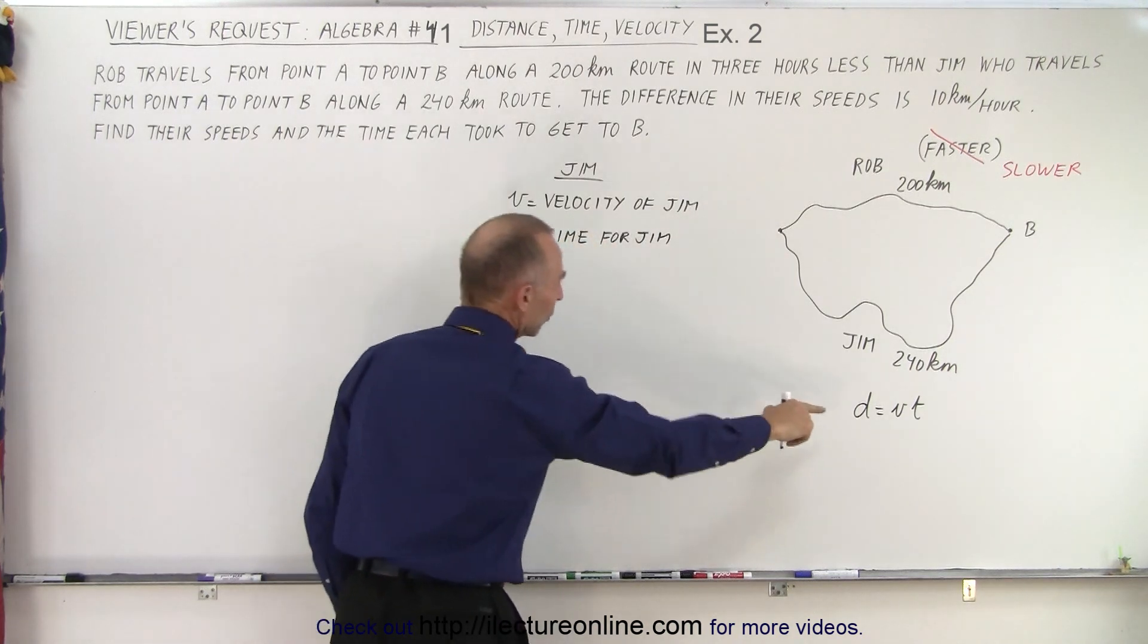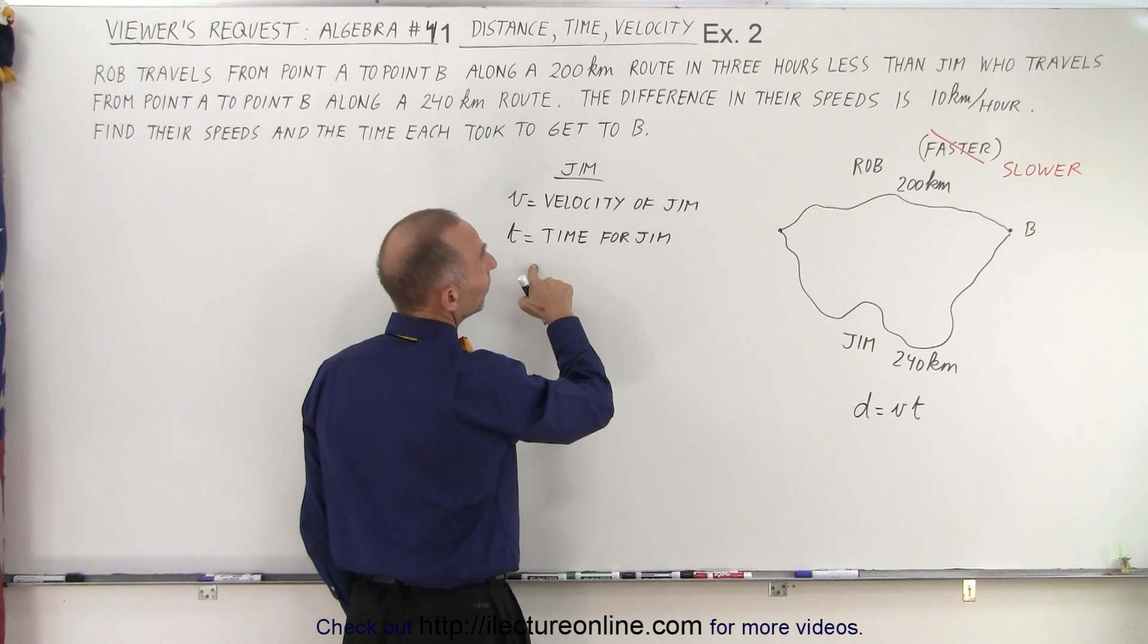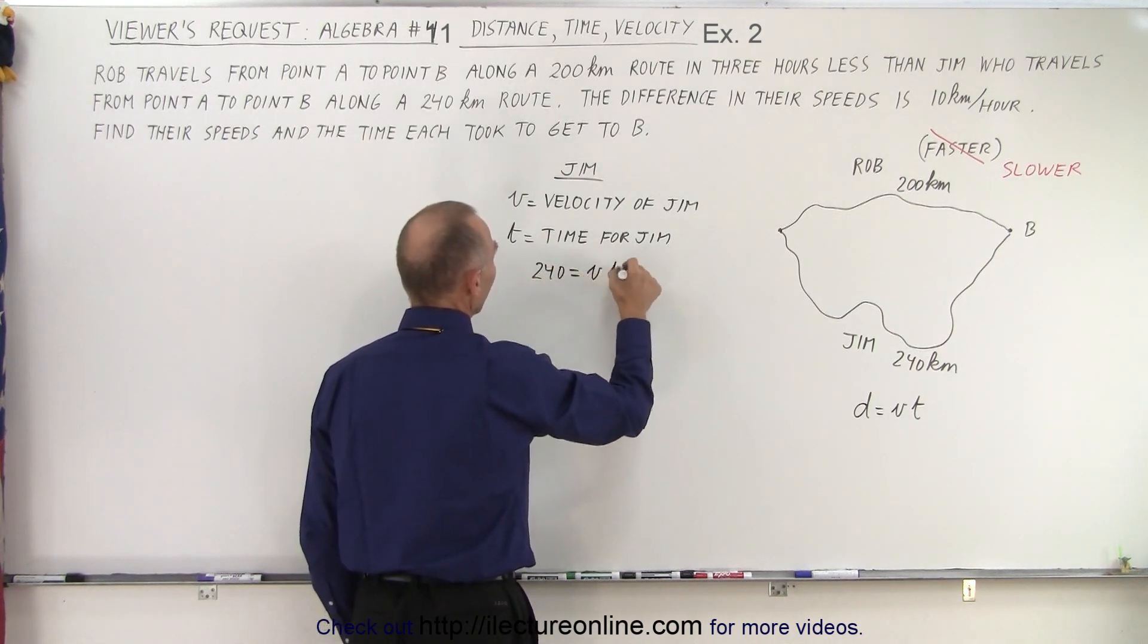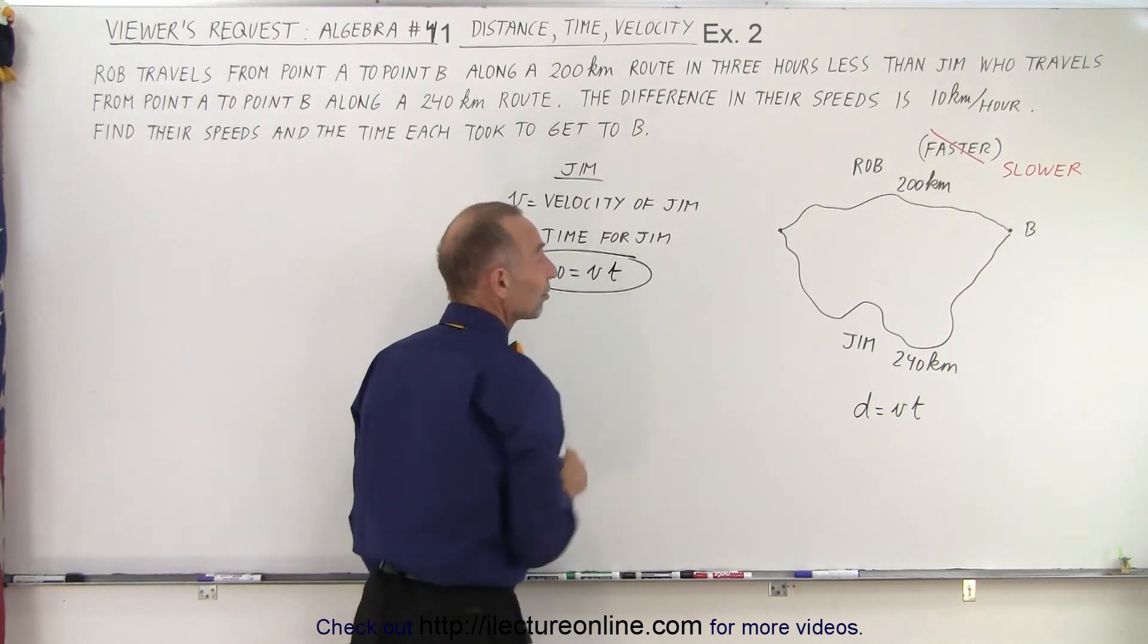So now that we have that, we set up the equation. The distance for Jim is 240 kilometers, so 240 equals the velocity times the time. So we still have the very same equation as before.